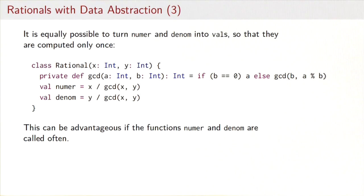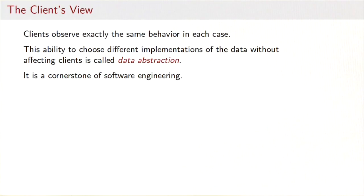What we could equally well do is turn numer and denom into vals so that they are computed only once. So now that would be advantageous if the functions numer and denom are called very often. What's important here is that no matter which of the three alternatives we choose, clients observe exactly the same behavior in each case. This ability to choose different implementations of the data without affecting clients is called data abstraction, and data abstraction is one of the cornerstones of software engineering.